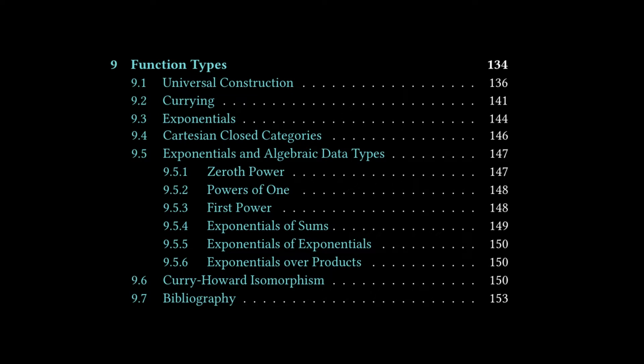We are going to cherry-pick only a couple things to cover here, so we're going to spend most of our time talking about currying because I think that is the most that I can add to with my experience from Functional Programming. Then we're going to briefly touch on Cartesian Closed Categories, and then I'm going to highlight something Bartosz said from the corresponding lectures to this chapter.